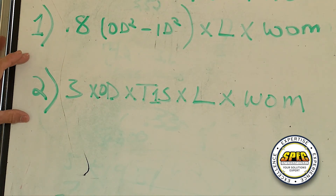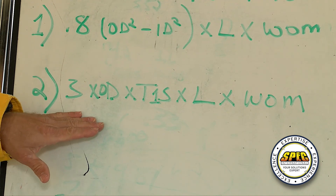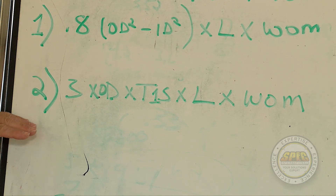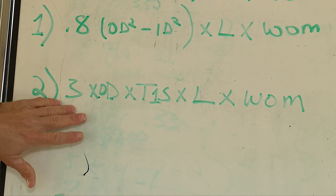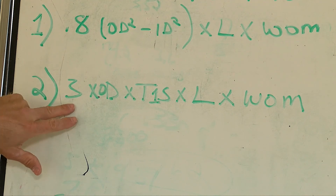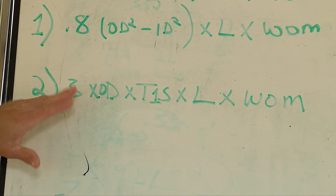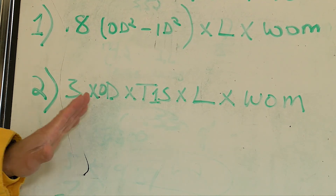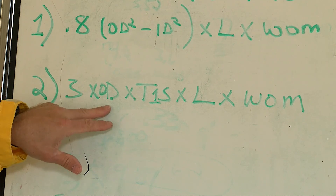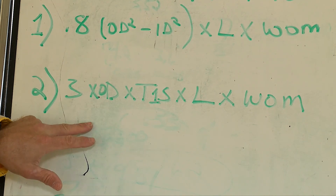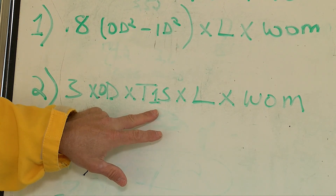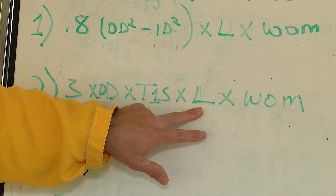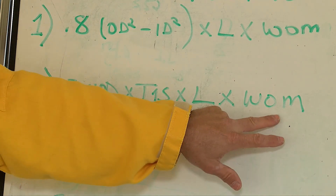The second formula is used for field calculations. The math is a little bit simpler. For the formula, we're using 3, which the 3 is pi — we've just taken off the .14 — by outside diameter, times the thickness of one side, by the length, by the weight of material.